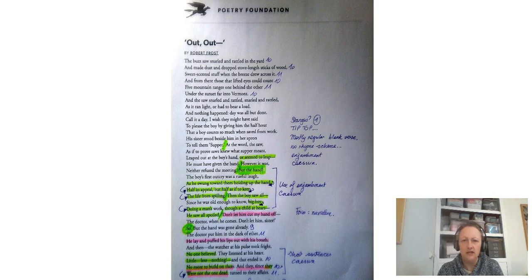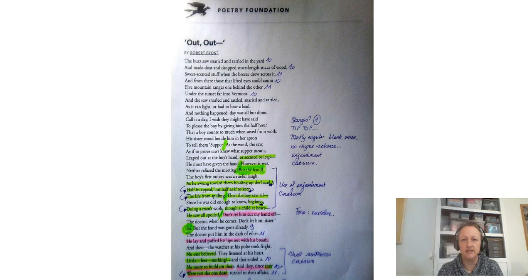So we've got regular blank verse. There wasn't a rhyme scheme — yard, wood, it, count, other, Vermont. But I did start to notice in the middle we started to get much more enjambment — you can see where I put the little arrows from one line to the next. We also got quite a few caesuras where I put those breaks in. And I noticed that some bits, highlighted in pink, are particularly monosyllabic, which draws attention to those parts. At the bottom we had lots of short sentences in the caesura.